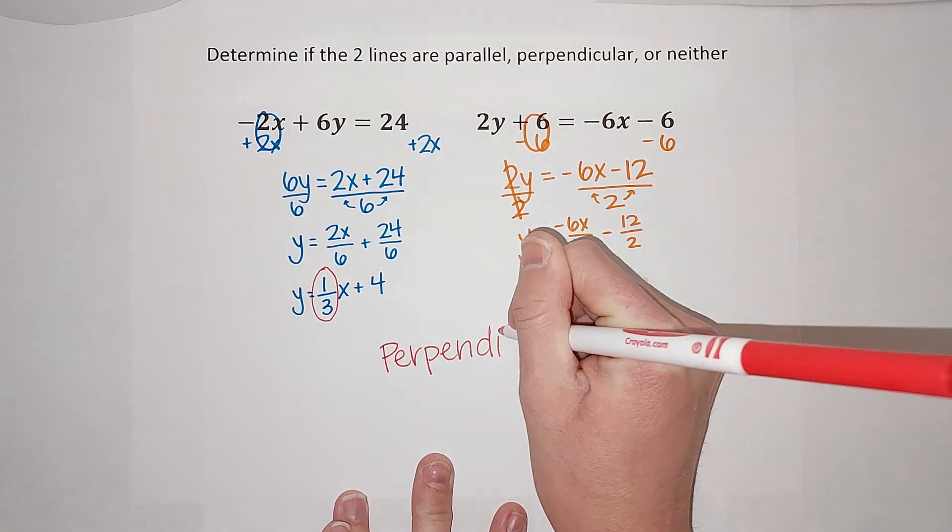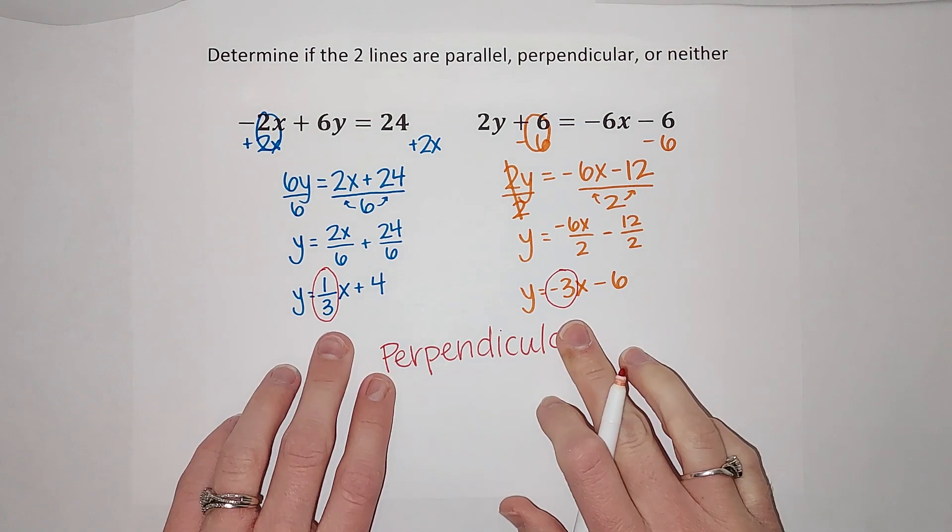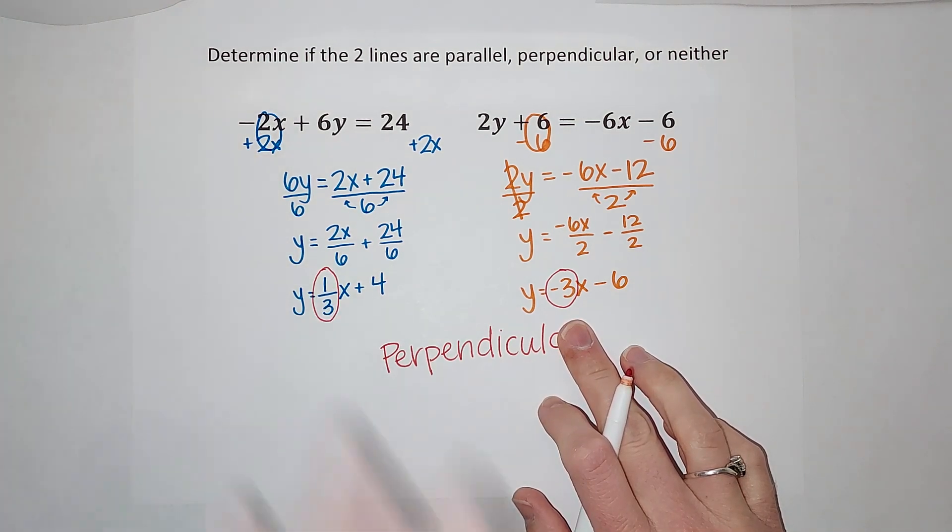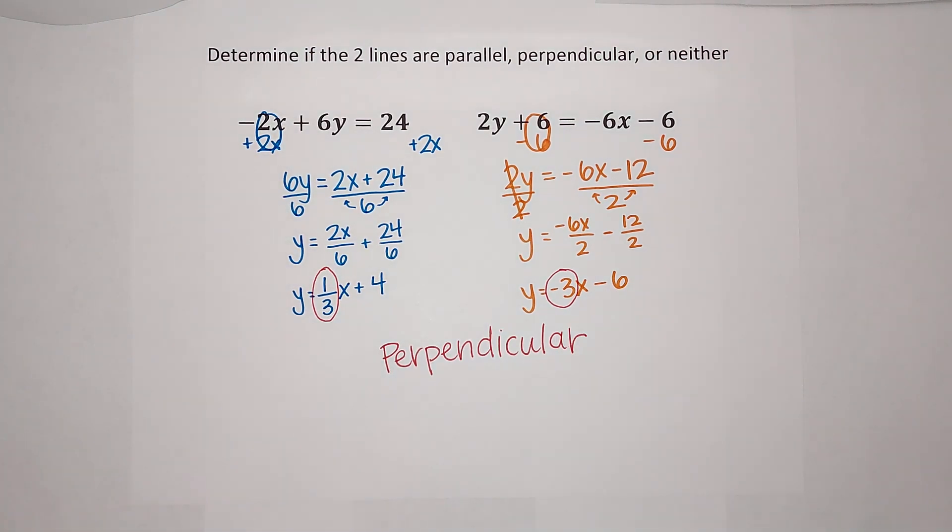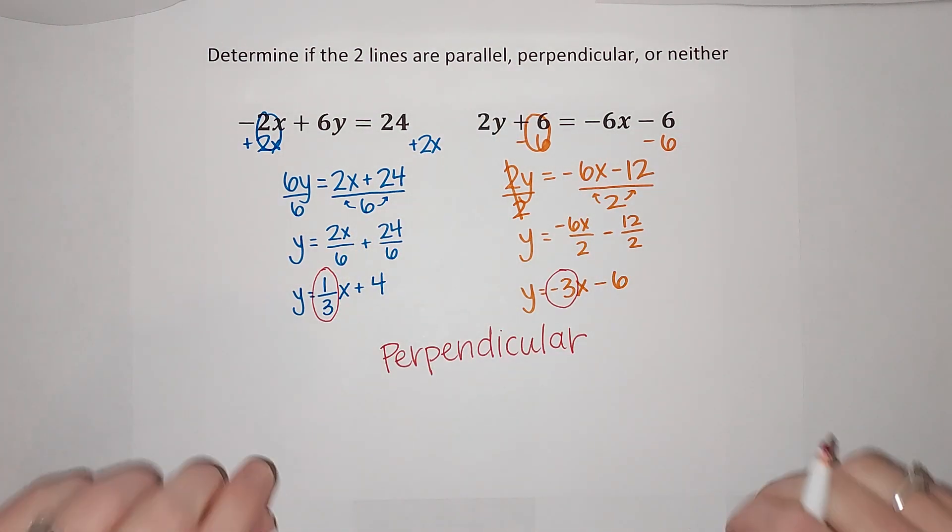Now if you had two with just different slopes that weren't the same and weren't the reciprocal and a different sign, then they would be neither, just two lines that cross each other. Hopefully that made sense. If you want an example for parallel lines, I will link one in the corner for you. Thanks, bye!